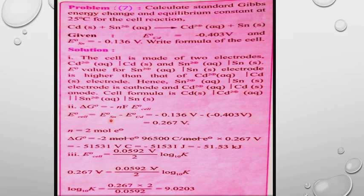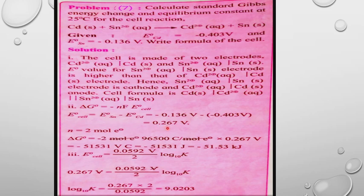Calculating E°_cell: E°_cell = E°(Sn) − E°(Cd) = −0.136 − (−0.403) = −0.136 + 0.403 = 0.267 V.